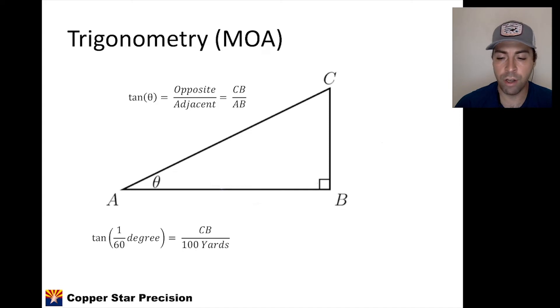So let's start plugging in numbers to our calculator. We get the tangent of 1/60th of a degree, times 100 yards, solving for the length CB. Doing some dimensional analysis, there's 3 feet in a yard, 12 inches in 1 foot, and we get 1.047 inches. So just about 1 inch.